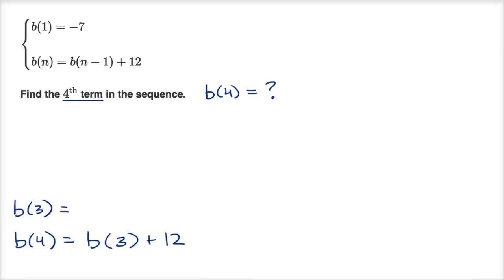So b(3), if n is three, is going to equal b(2) plus 12. We don't know what b(2) is, so let's keep going.